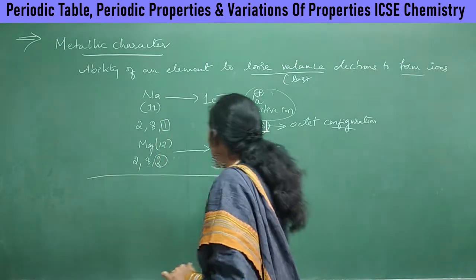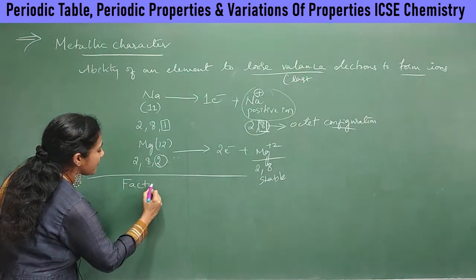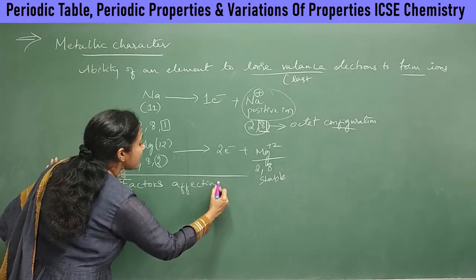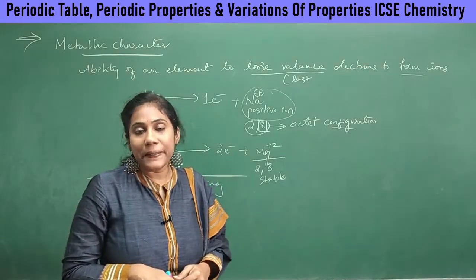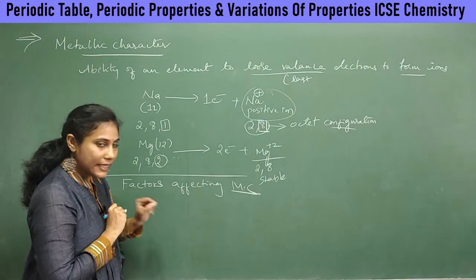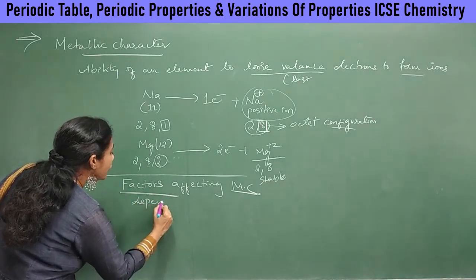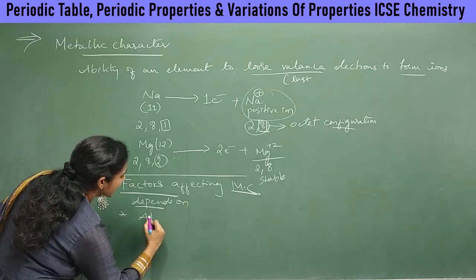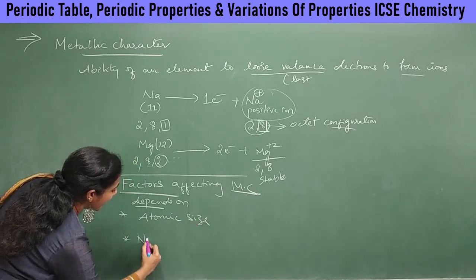Now let us discuss the factors affecting metallic character — the factors on which metallic character is dependent. Metallic character depends on two factors: the first one is atomic size, and the second one is nuclear charge.